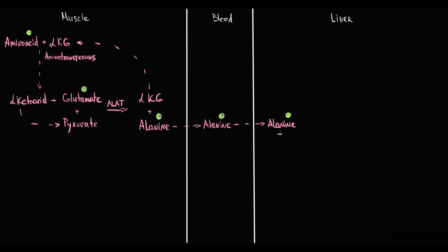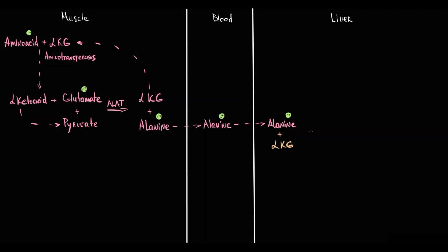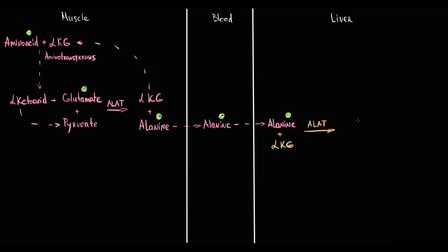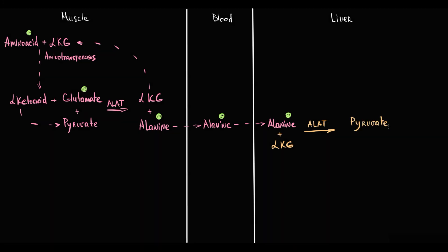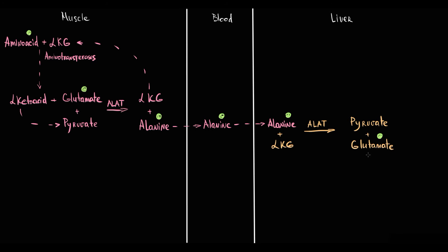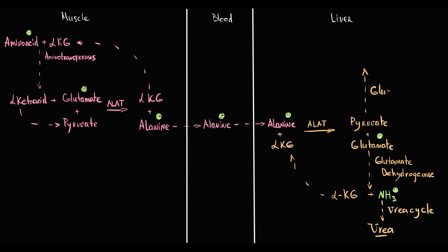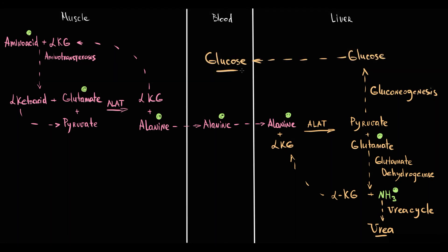In the liver, alanine transfers its amino group to alpha-ketoglutarate, catalyzed by liver alanine aminotransferase. Alanine is converted into pyruvate, and when alpha-ketoglutarate accepts ammonia it becomes glutamate. The final step of the Cahill cycle in terms of ammonia metabolism is that glutamate is oxidized by glutamate dehydrogenase to alpha-ketoglutarate with release of free ammonia. Ammonia undergoes the urea cycle forming urea, and from pyruvate the liver makes free glucose molecules that enter circulation, maintaining blood glucose levels.